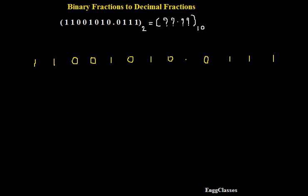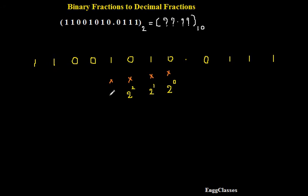First, let me consider this digit — this is 0. I multiply this with 2 to the power 0. Similarly, I'll multiply the second digit with 2 to the power 1. In the same way, I need to process further — the next digit with 2 to the power 2. Then the next digit, which is a 1, I'll multiply this with 2 to the power 3.